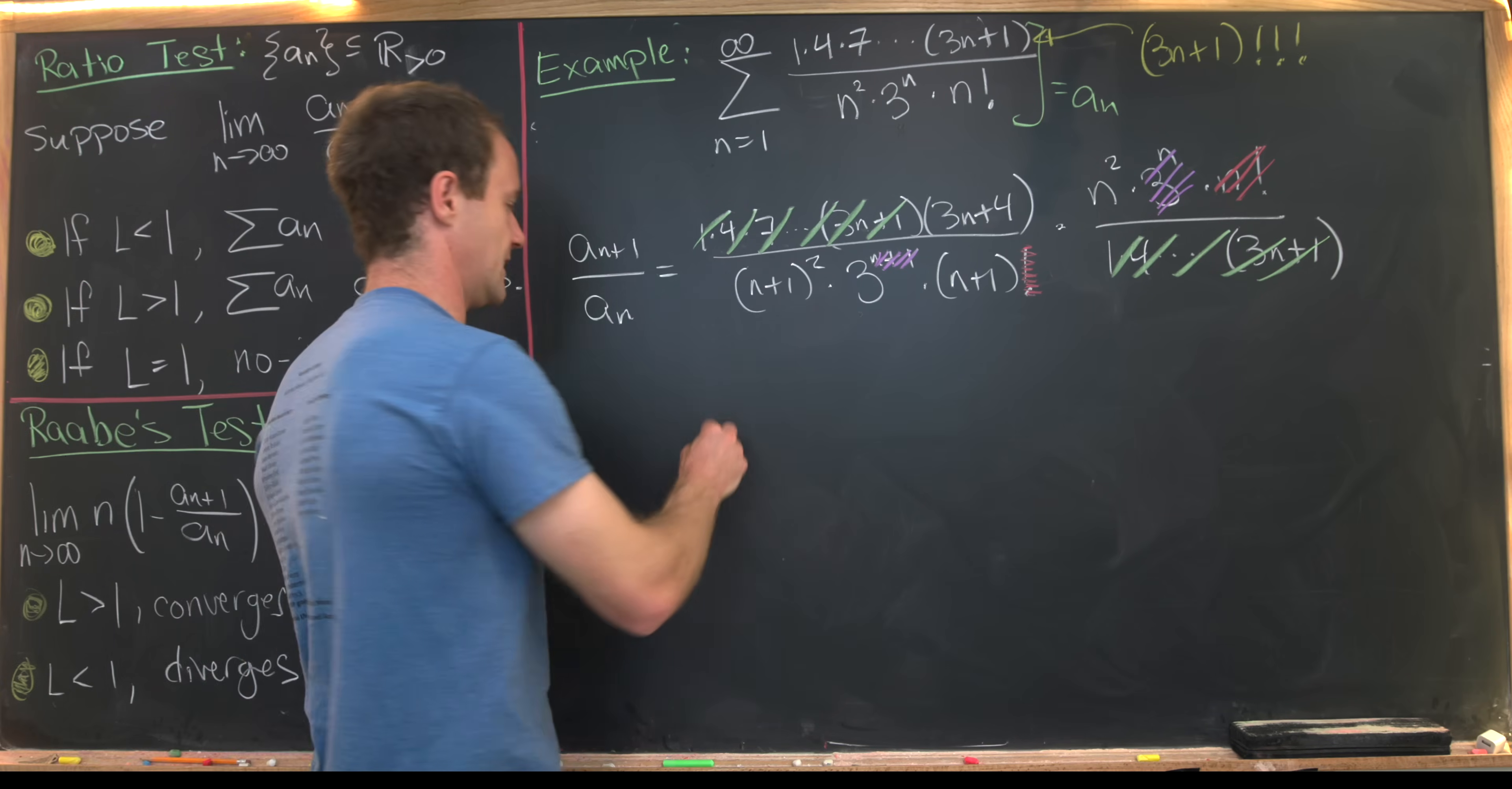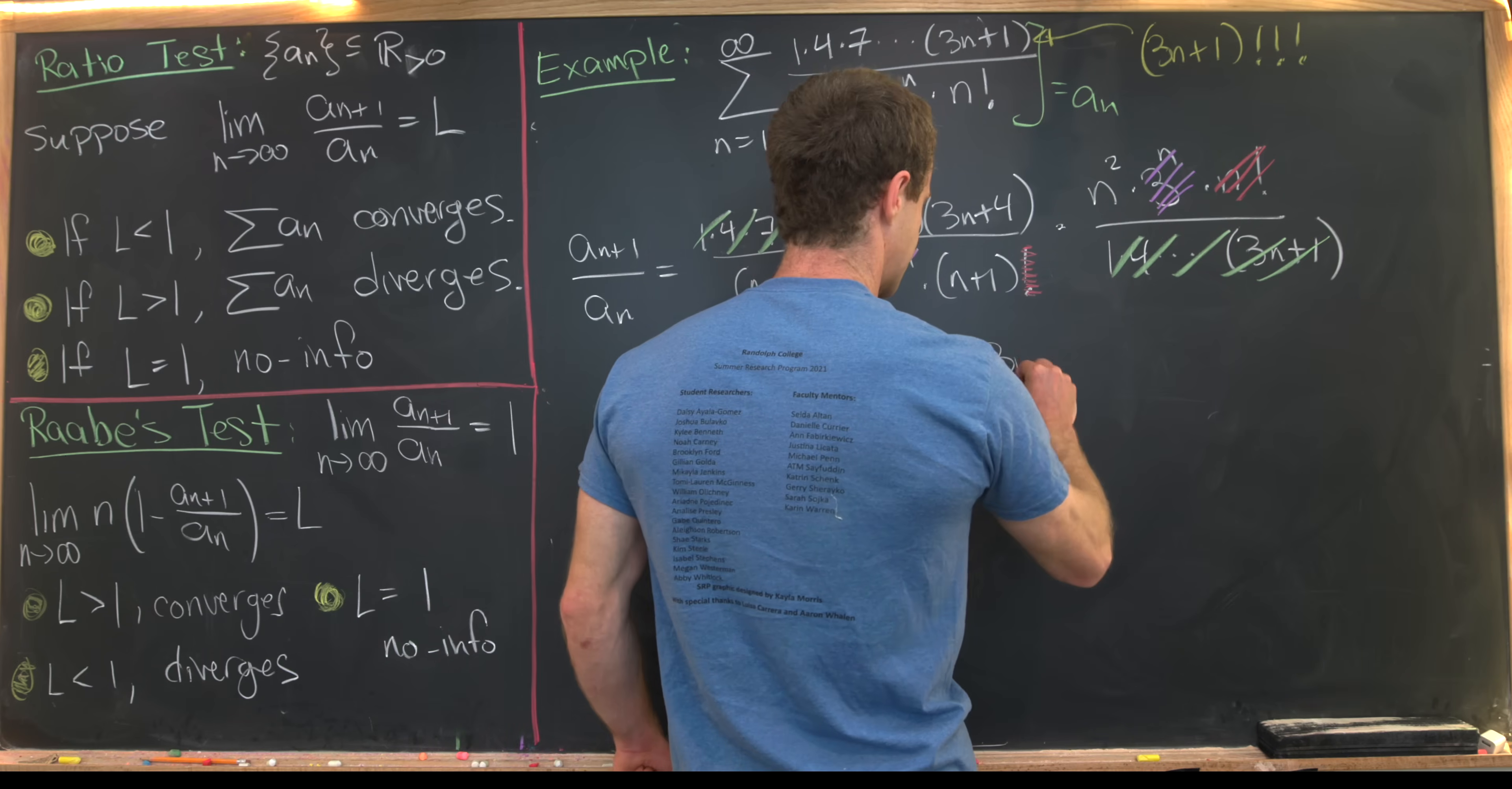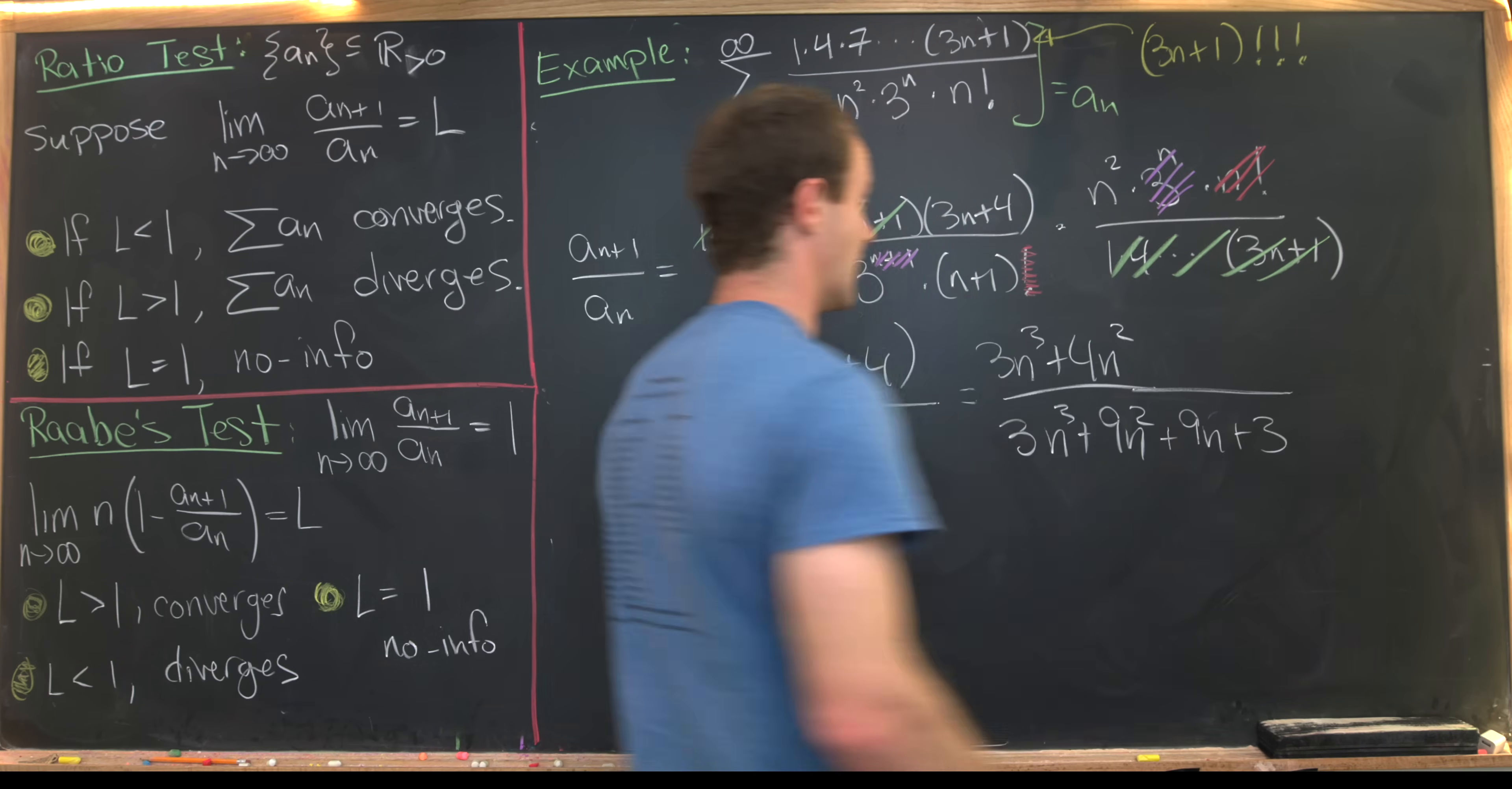Now we can start simplifying. All of that is going to leave us with n²(3n+4) in the numerator and then 3(n+1)³ in the denominator. We've got (n+1)² and an (n+1). Now we can multiply that out. That'll give us 3n³+4n² in the numerator. And then using a standard expansion of this binomial, we'll have 3(n³+3n²+3n+1) in the denominator like that.